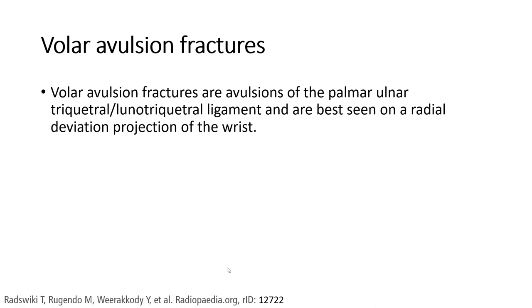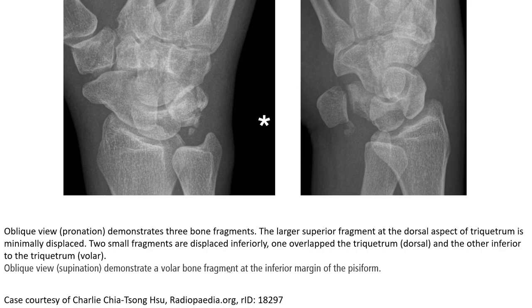Volar avulsion fracture involves avulsion of the palmar-ulnar triquetrum, with the ligament pulling on the radial avulsion projection of the wrist. On the plain image, a subtle small bone fragment is visible, with a larger superior fragment. The superior fragment at the dorsal aspect of the triquetrum is minimally displaced.